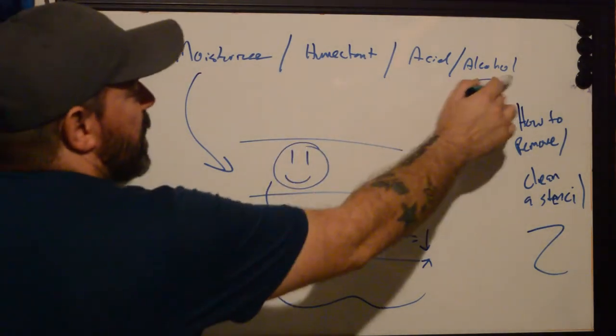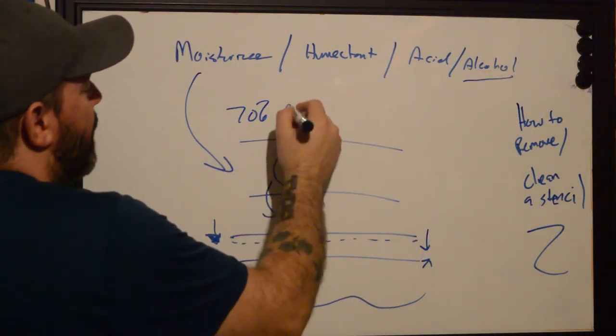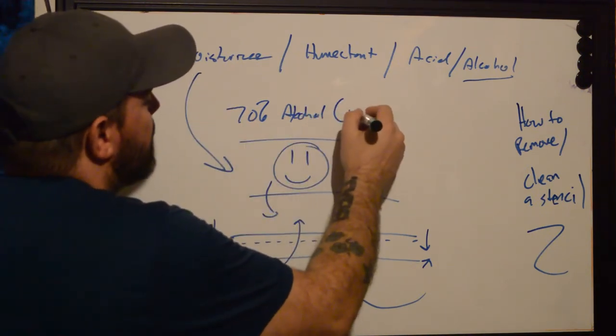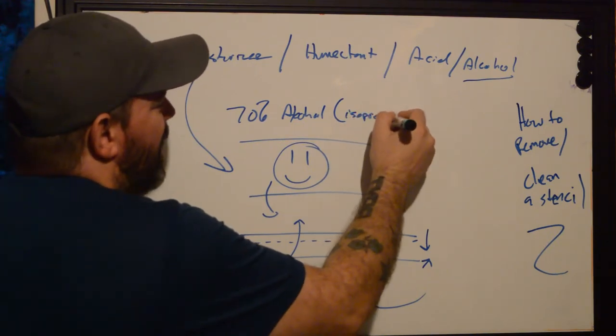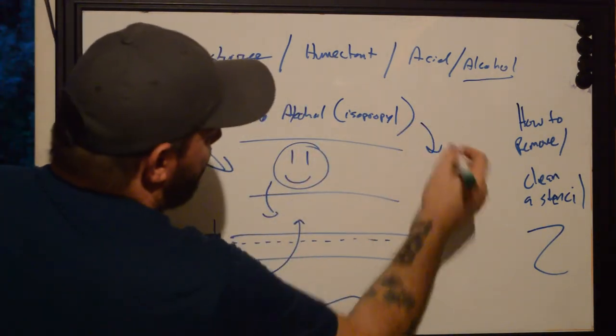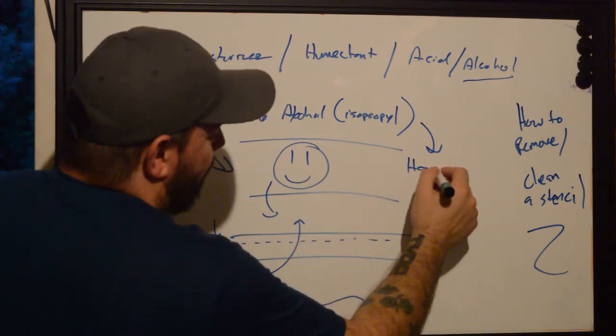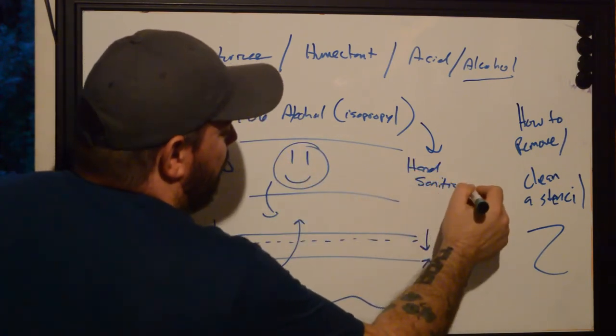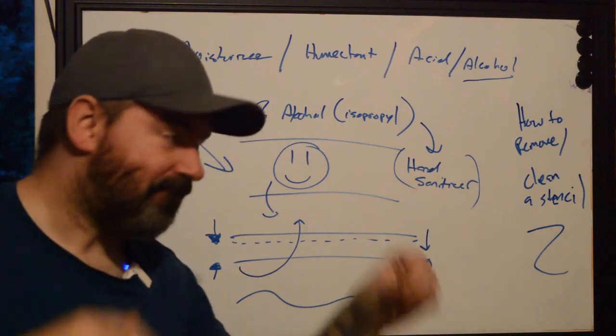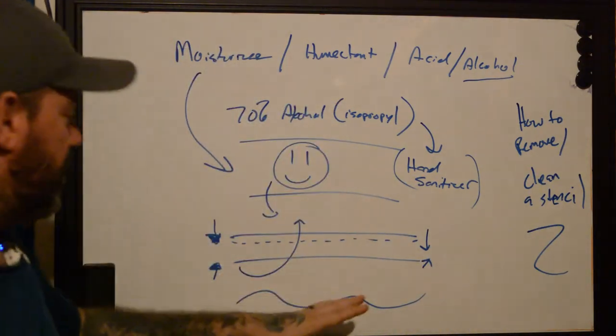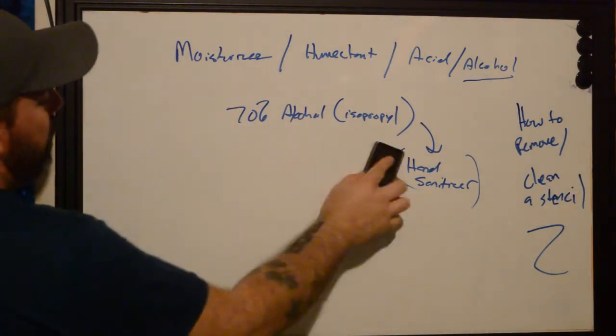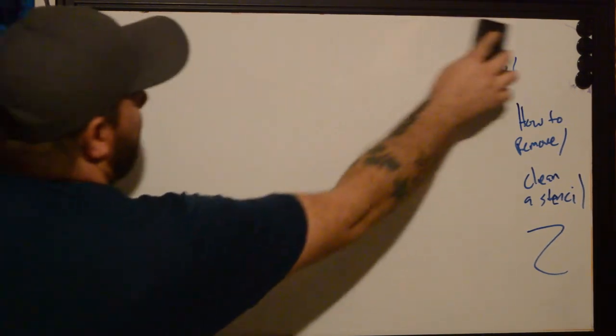So normally what we'll do is we'll take 70% alcohol, isopropyl, or if you even want to do something that's super fancy here, we'll use hand sanitizer. Hand sanitizer specifically is great at this stuff. Alcohol and hand sanitizer are going to do basically the same thing to the skin, but what's the big difference between the pair? Let's do a list: alcohol and hand sanitizer.